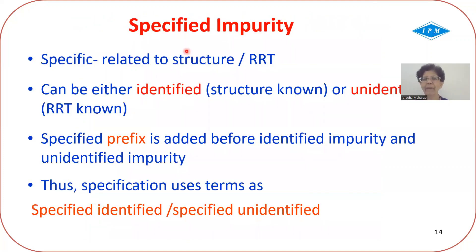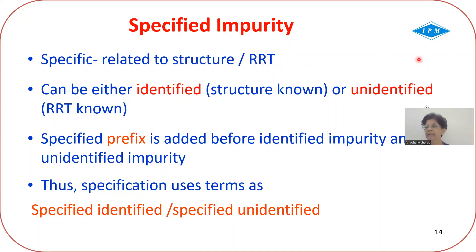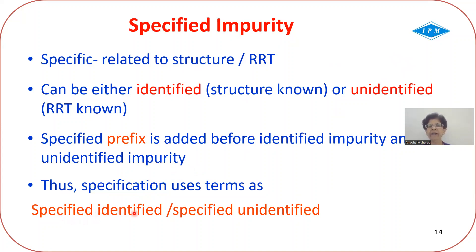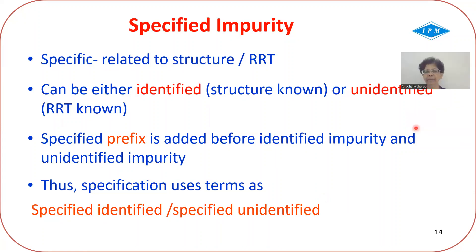The next term is specified impurity, which means specific with respect to either structure or relative retention time. When you know the structure, the impurity is identified; when you know only the RRT, it is unidentified. The word 'specified' is a prefix added before either term, as suggested by ICH Q3A: 'specified identified' or 'specified unidentified.' Both are specific in their own way.